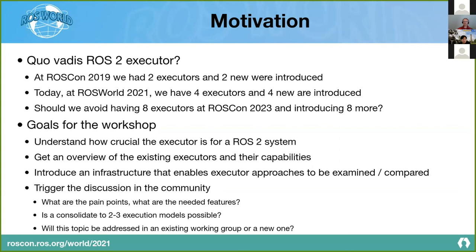The goals for this workshop are: first, understand how crucial executors are for ROS 2 systems; then get an overview of all existing executors and their capabilities; introduce an infrastructure that enables us to compare different executor approaches; and most importantly, get a community discussion going — what are the pain points, the needed features, the use cases? Can we consolidate to two or three execution models, or do we want a flexible architecture with many executors, and where will this topic be addressed going forward?